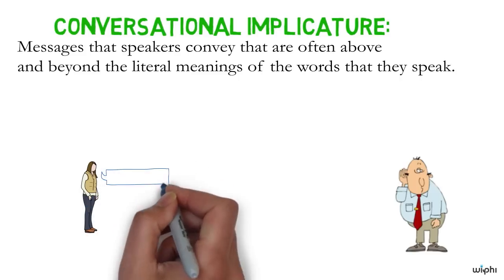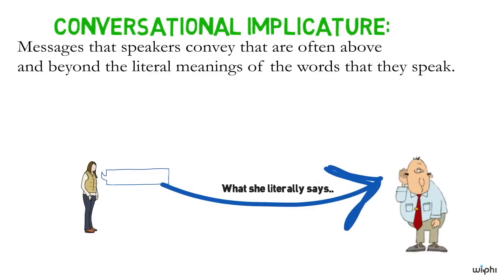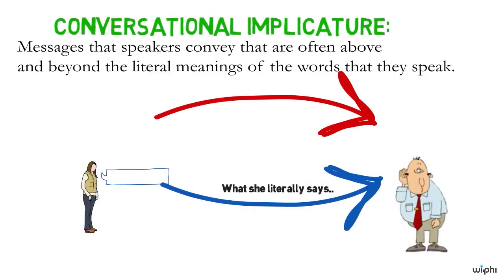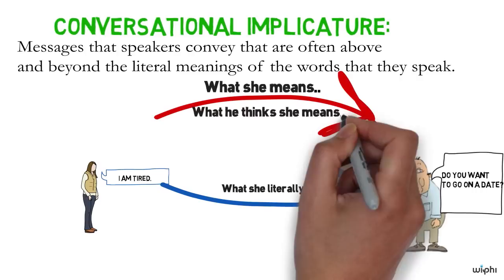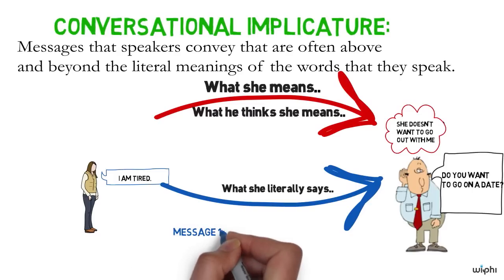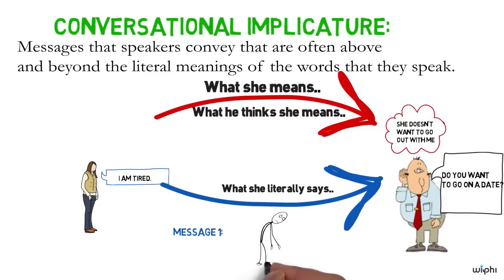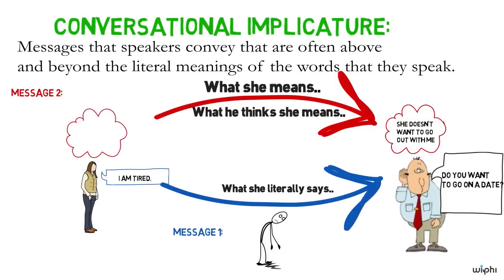Conversational implicatures are messages that speakers convey that are often above and beyond the literal meaning of the words that they speak. The trick is that speakers hope to get hearers to recognize their intention in speaking, even if this intention doesn't line up directly with the words spoken. If I say I'm tired in response to an invitation, I hope that my hearer will ask herself why I'm telling her that I'm tired, and as a result infer that I don't really want to go out on the date. So we now have two potential messages: the literal meaning of I'm tired, and the implied meaning that I don't want to go on the date.